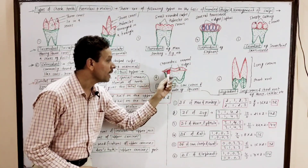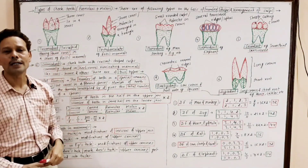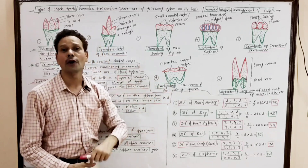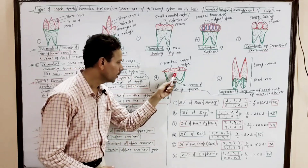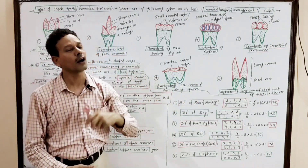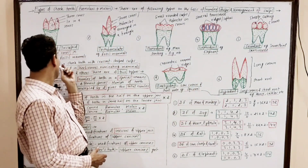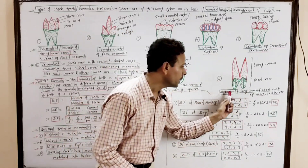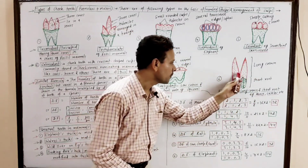In selenodont, the crown possesses crescent-shaped ridges or cusps. Selenodont teeth are further grouped into two categories. First is brachydont — low crown and short root — found in ground squirrel. Second type is hypsodont — here the crown is long and root is short — such type of teeth are characteristics of horse and cattle.